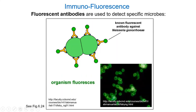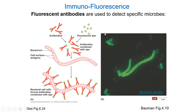We'll come back to immunofluorescence in a bit. Here's another example — this is looking at Yersinia pestis, so antibodies to recognize the bacteria that causes plague. Just a different way to use fluorescence. Most fluorescence stains a particular molecule like DNA; this way you can be even more specific.